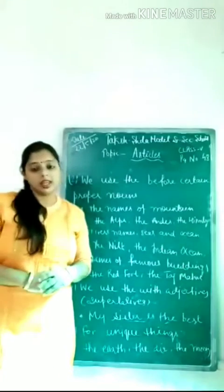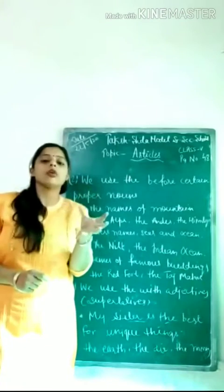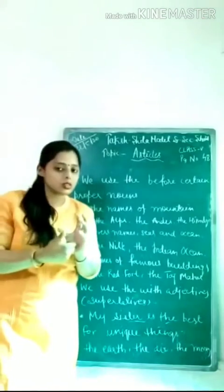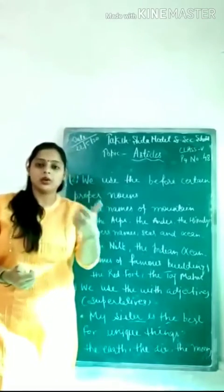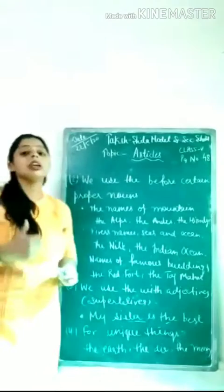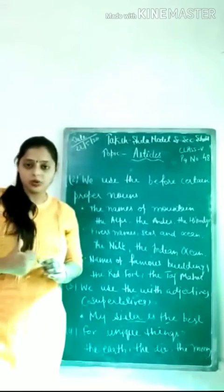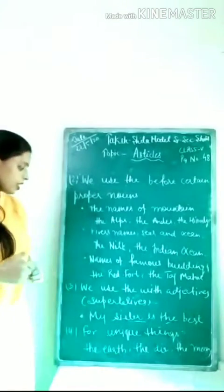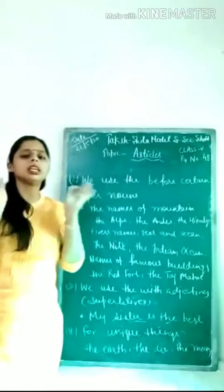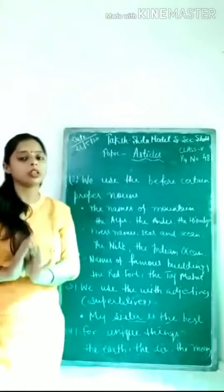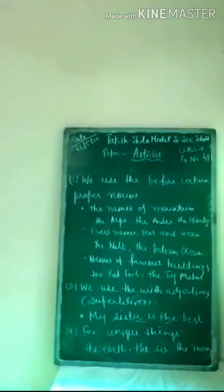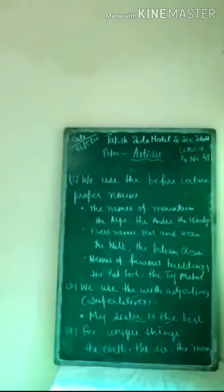We use The for unique things — things of which there is only one in the world. For example, the earth (we have only one earth), the air, the moon (only one moon). All these things are unique, and for unique things we use The. So these are the three articles: A, An, and The, with their different rules of usage.